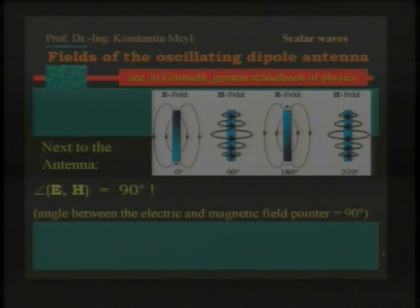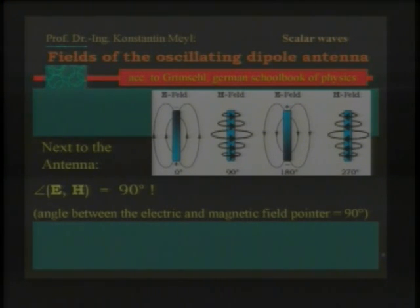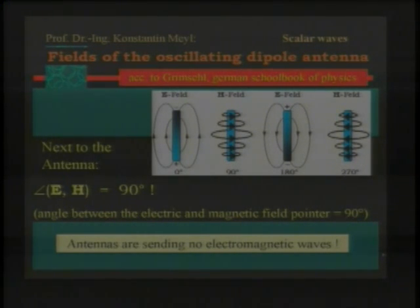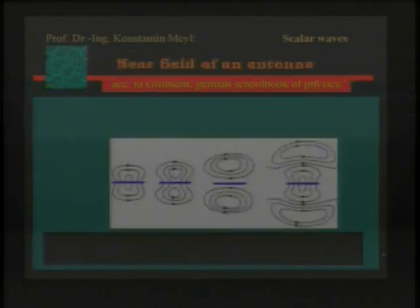Everybody knows that we have 90 degrees. But you have learned in the slide before that the electromagnetic wave has a phase angle of zero degrees. So the result is: antennas are sending no electromagnetic waves. This is what you get if you think it through consistently. Well, this will be a problem.